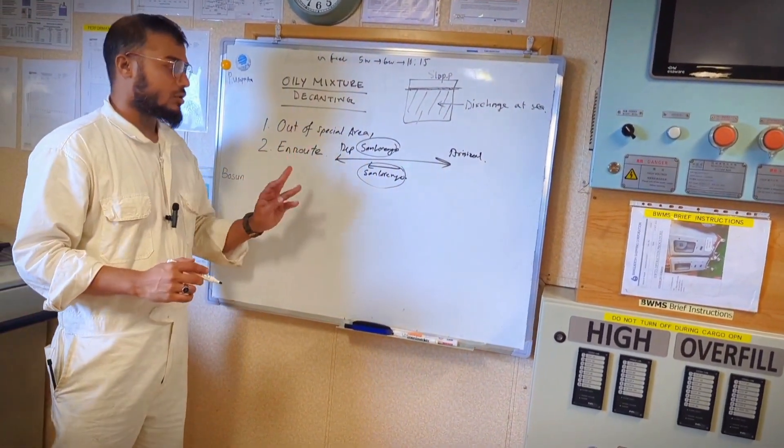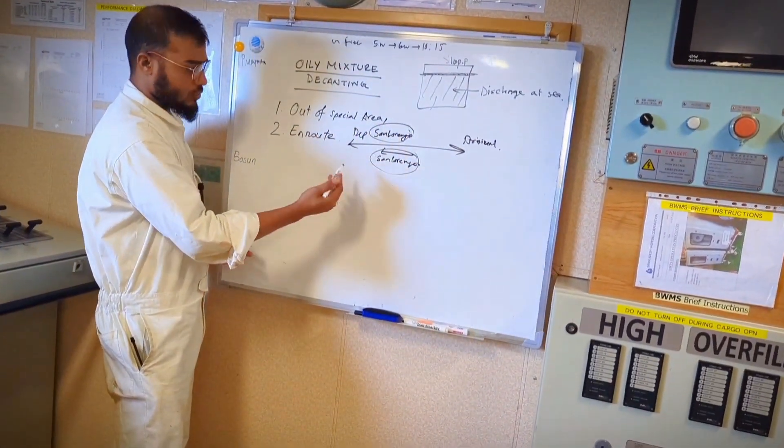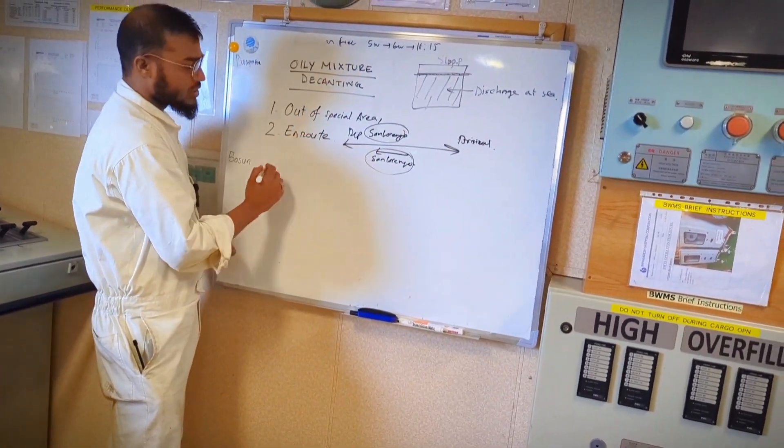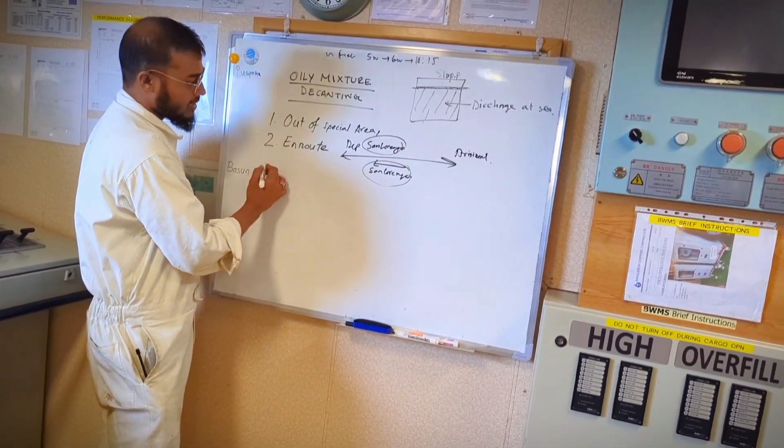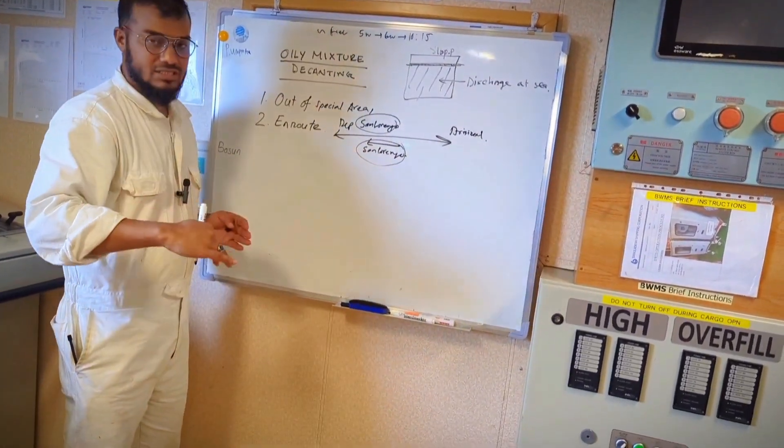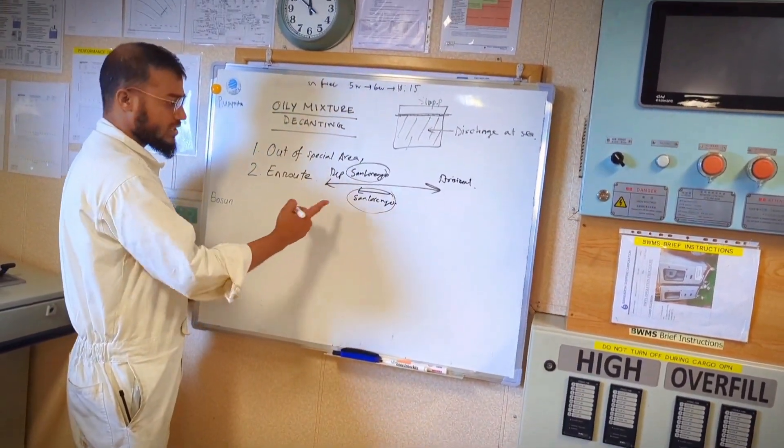So in this case what you have to follow - same out of special area, and you know this part of the world is out of special area, it's not included in special area for MARPOL Annex I. And your vessel will have to have a passage, just you have to make a passage to have this plan to decant.